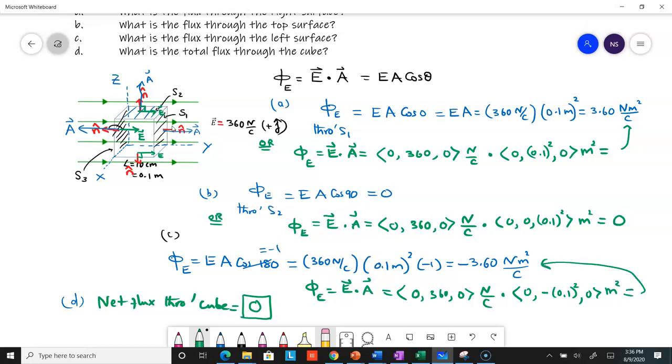You can end by calculating the total flux through the cube to be zero. In general, I would just say watch the problem. In some problems, if the magnitudes of E and A are given and you can easily figure out the angle, this may be the quickest way.